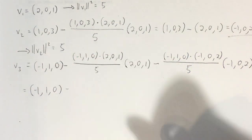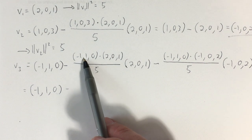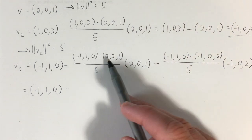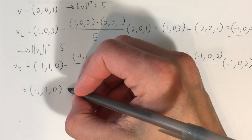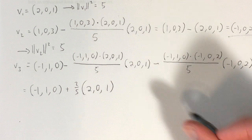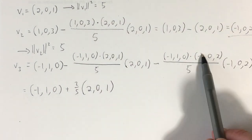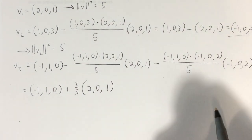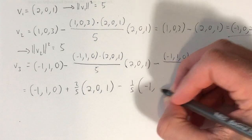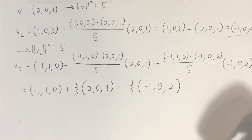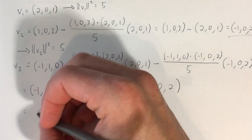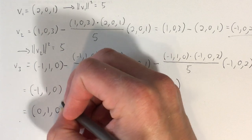Simplifying: the first dot product gives -2 + 0 + 0 = -2, so that becomes -2/5, minus -2/5, which I'll write as plus 2/5 times (2, 0, 1). For the second dot product, (-1)(-1) gives +1, then 0 and 0, so that becomes minus 1/5 times (-1, 0, 2). Computing all of that, we end up with V3 = (0, 1, 0).